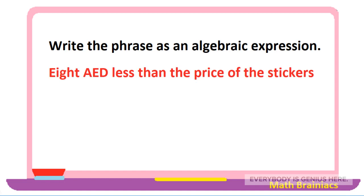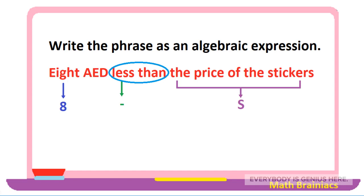Let us work on another example: write the phrase as an algebraic expression — 'eight less than the price of the stickers.' Let us start writing number eight. 'Less' means subtract or minus, so we write the minus symbol. Let us assign letter s as the price of the stickers. We have a comparison word 'less than,' so the phrase after it must be written before the number. The phrase as an algebraic expression is s minus eight.